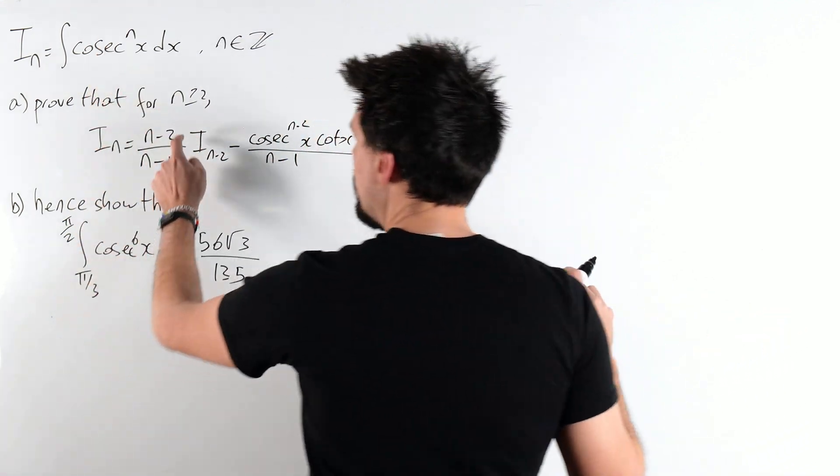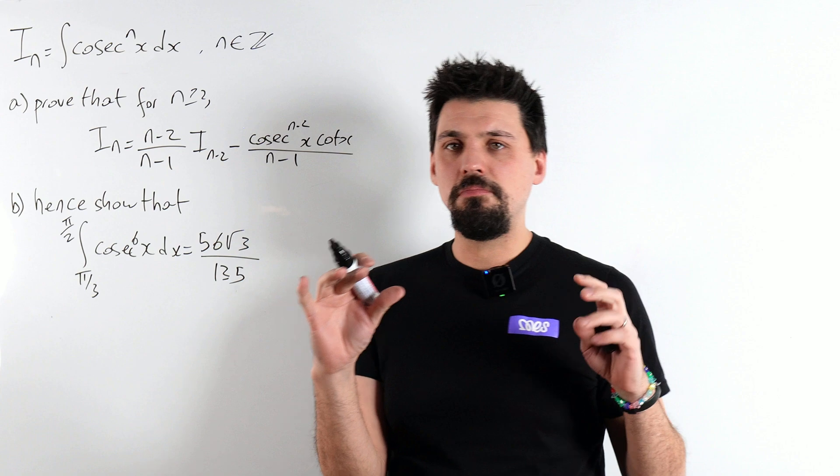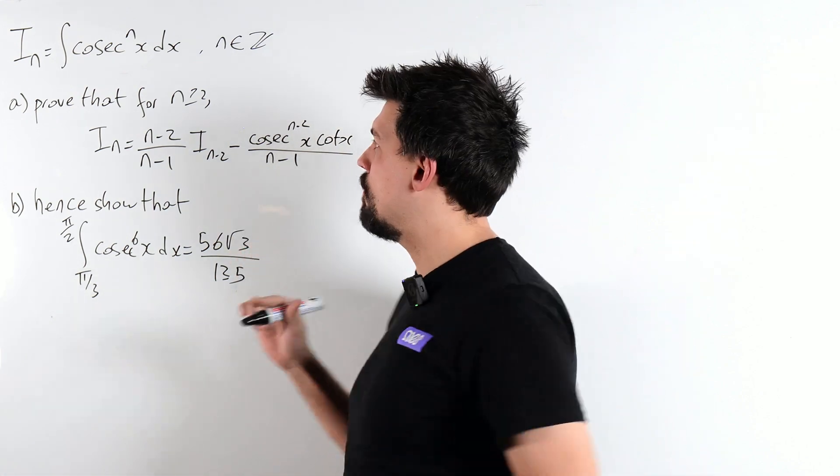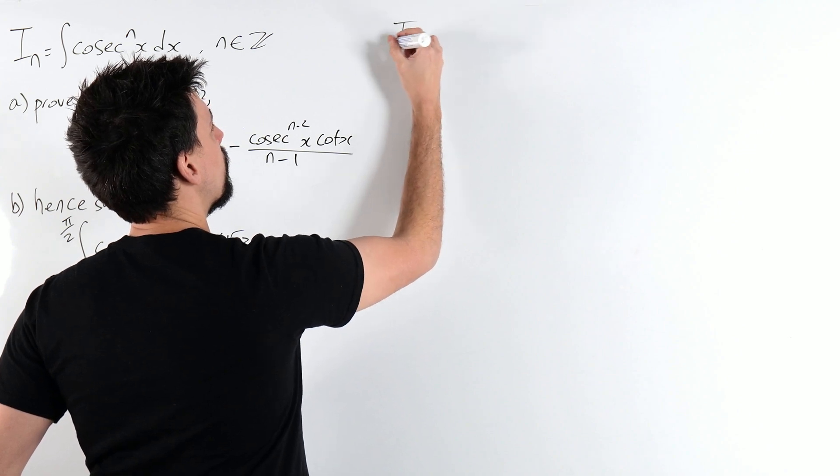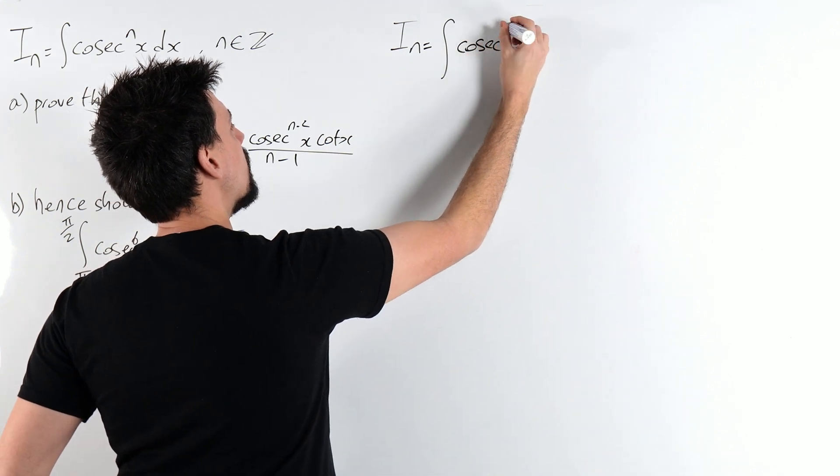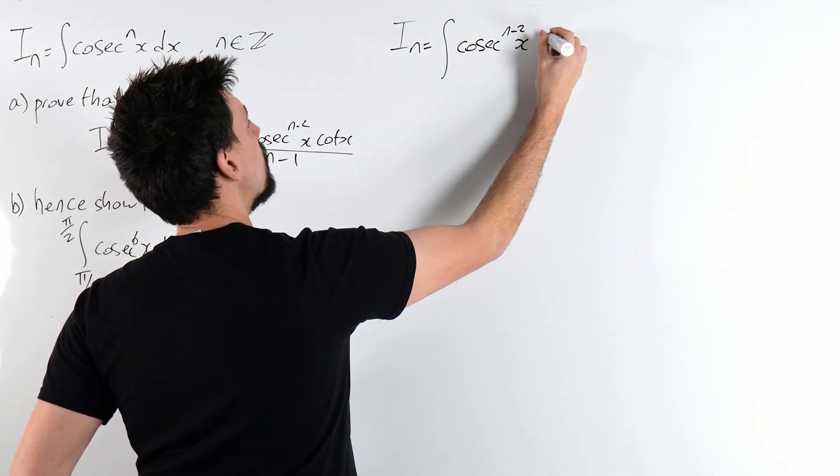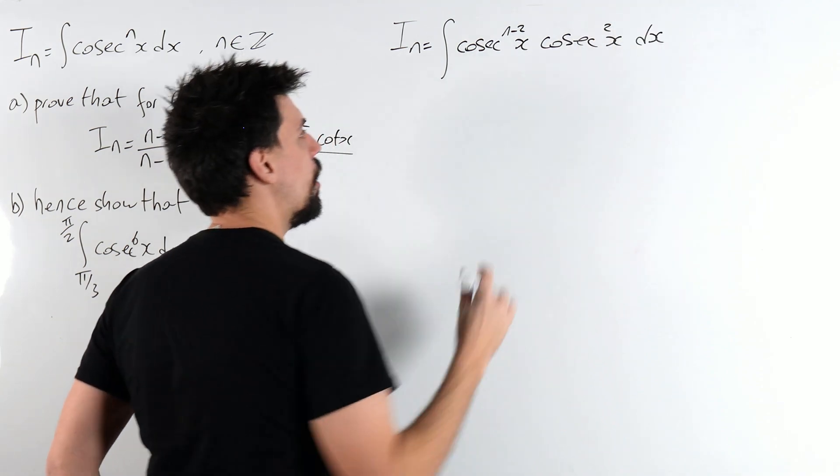Okay, classic one here, we can see an i_n-2, which tells me we're going to want to be using trig identities, integration by parts. So what we're going to do is split that up and in fact, classic move, we're going to split out a cosec squared.